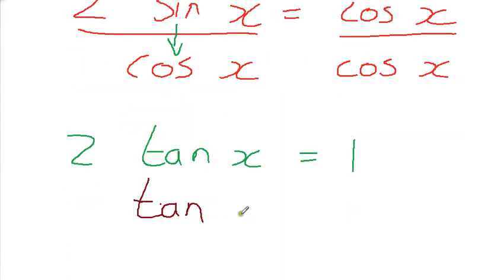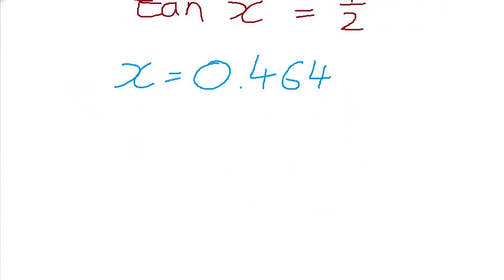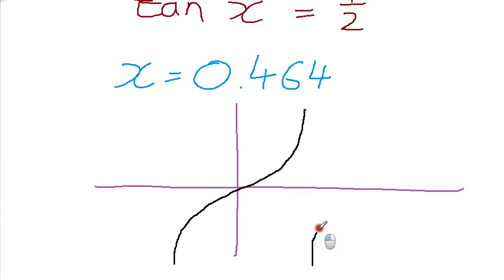Then we just play around with it a little bit. We get tan of x is equal to 1 half. Then we inverse tan of 1 half, and what we are going to get when we do that is your calculator will tell you that x is equal to, in radians, make sure your calculator is in radians, 0.464. But that is not our final answer because, as we know, tan is repeated every 180 degrees, or rather than saying 180 degrees, we can say it's repeated every π.